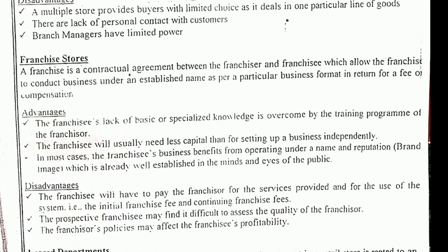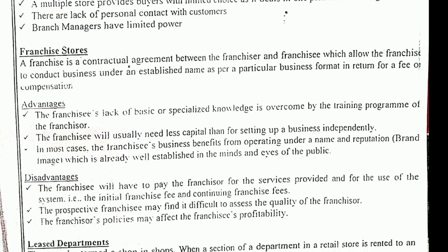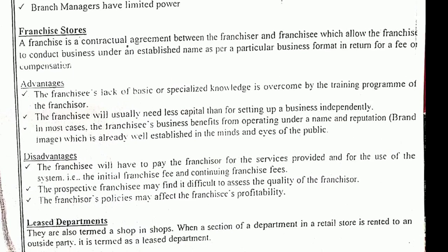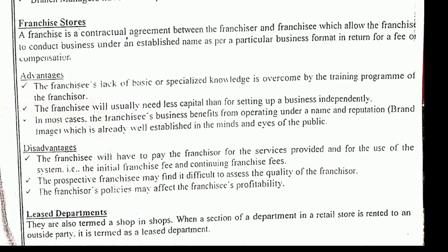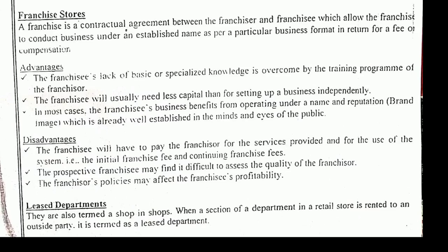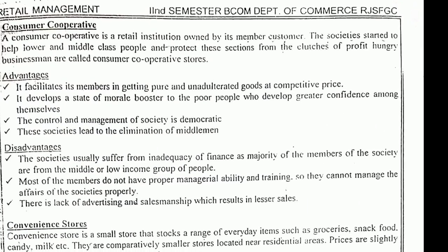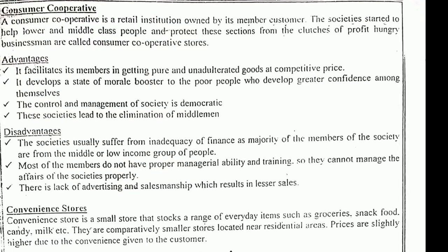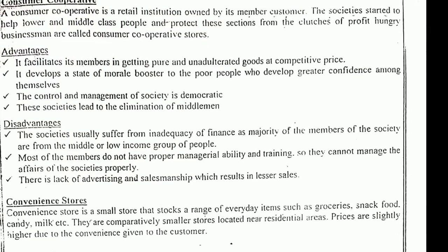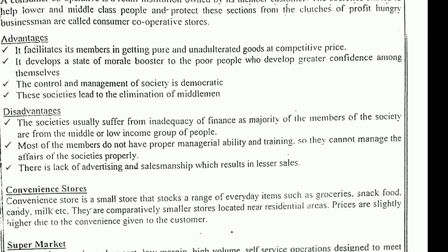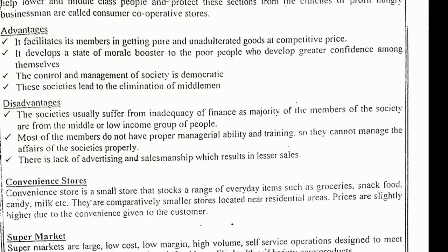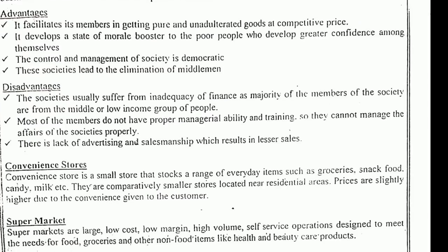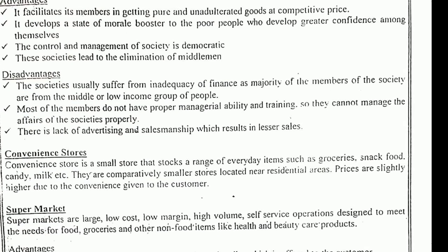Consumer cooperative: here many people take individual initiative, come together, and do business collectively — this is known as a consumer cooperative. Next, the second part of store-based retailing is merchandise offer. Convenience stores are where everything is available conveniently for the customer.